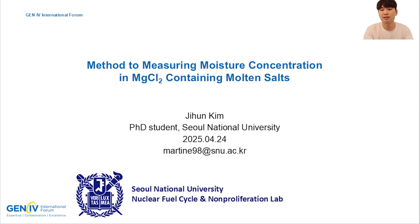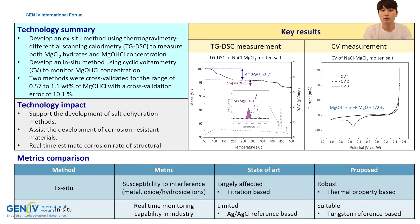Magnesium chloride-based molten salts are promising candidates to be used in either the primary or secondary loop of molten salt reactors. However, magnesium chloride is highly hygroscopic, and its reaction with moisture is considered a major factor causing structural material corrosion. Therefore, accurate moisture measurement is crucial for its usage.